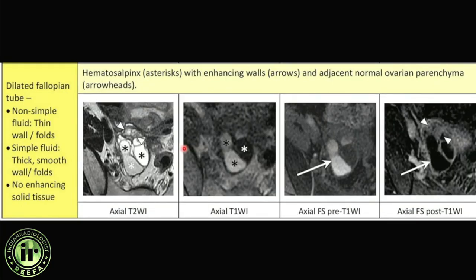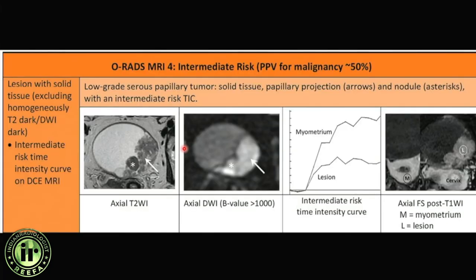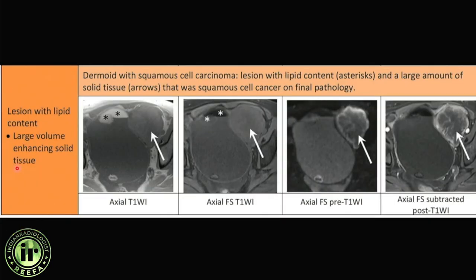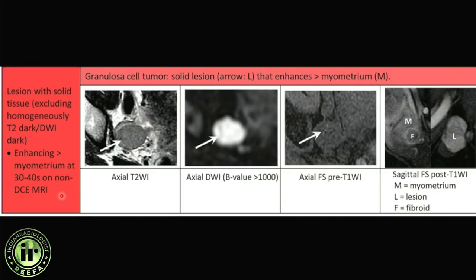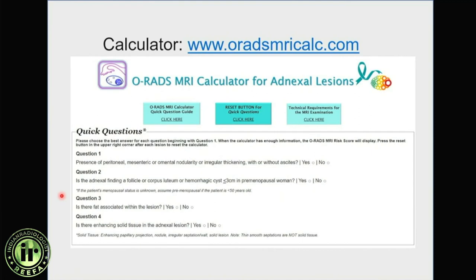A solid lesion that is not homogeneously dark on T2 — repeatedly emphasized, because homogeneously T2 dark means fibroma or thecoma — with a low-intensity enhancement curve is still ORADS 3. Examples include Brenner tumors and hematosalpinx. ORADS 4 lesions have an enhancing solid component, enhancing septa, enhancing wall, and an intermediate enhancement curve. A dermoid with squamous cell component — fat-containing but with enhancing solid tissue — also becomes ORADS 4. ORADS 5 lesions have solid tissue with a high-risk enhancement curve, representing highly malignant lesions.